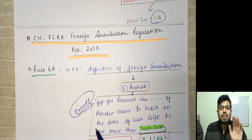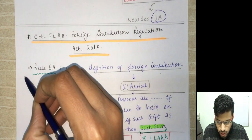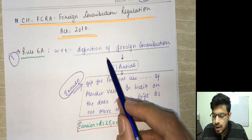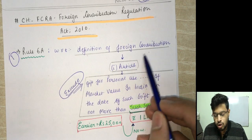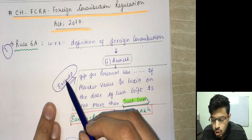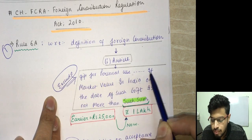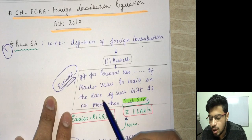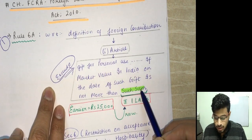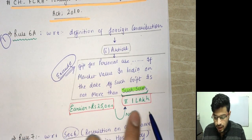Coming to the next chapter: Foreign Contribution Regulation Act 2010. Under FCRA, we have amendments in three rules. The first is Rule 6A, which deals with the definition of foreign contribution. One particular part excludes any gift for personal use if the market value in India on the date of such gift is not more than the prescribed sum. Under Rule 6A, this amount was earlier ₹25,000 and now it has been increased to ₹1 lakh.